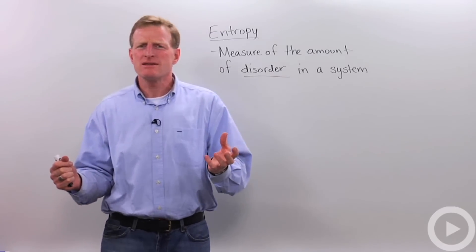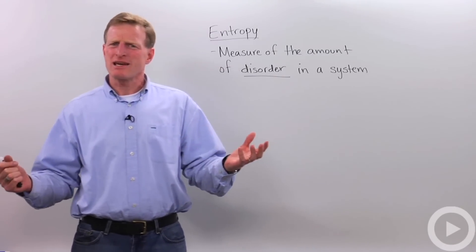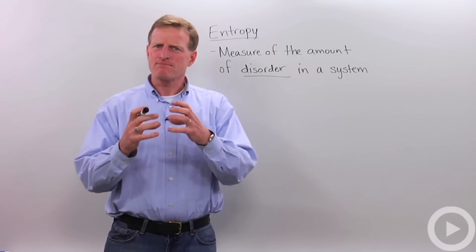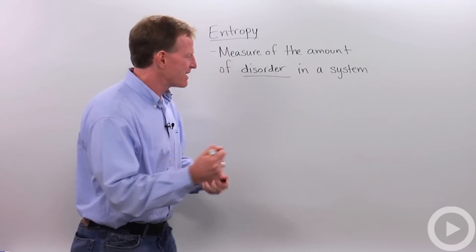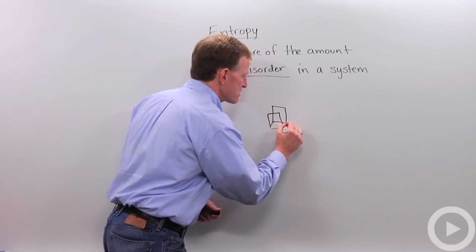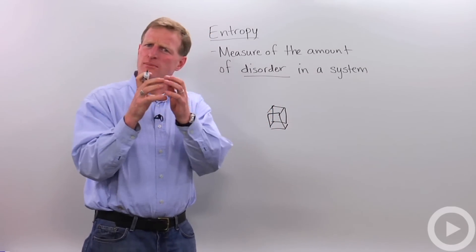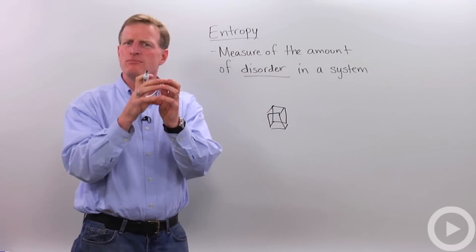So basically, entropy is the amount of disorder within a system. So let's look at an example of entropy. Let's say I've got water, and I've got that water frozen in a nice little ice cube. And this ice cube has a lot of order and a lot of structure. And all these molecules are held together in these very tight, precise bonds.